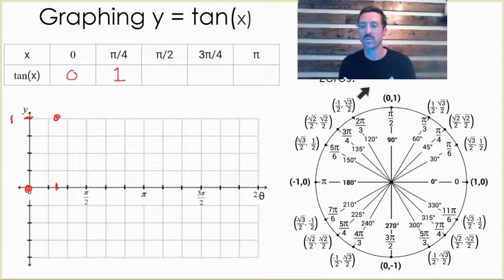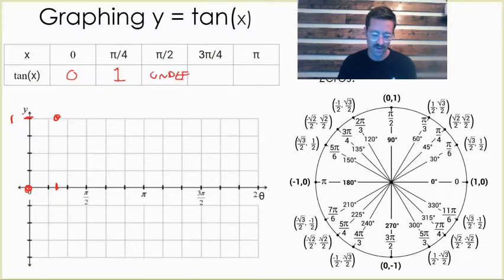Then we get to π over 2. At π over 2, y divided by x is one divided by zero. Be careful, that is not zero. That's undefined. Anything divided by zero is undefined. For undefined values, we're going to put an asymptote right there.